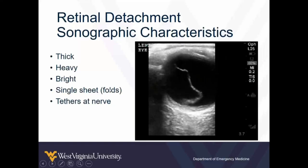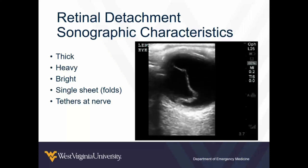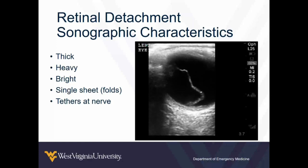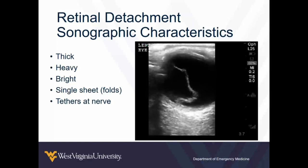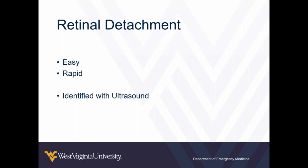There are things that can look similar that you need to differentiate. The retina is a thick layer of tissue — it's heavy, so it often tends to lay in a dependent area. It's very bright, and it's a single sheet; it may have folds in it but it doesn't have branches. And if you follow it, it will usually tether at the nerve. So those are going to be important characteristics to differentiate retinal detachment from other things. This is a diagnosis you can easily and rapidly make — you can find it with ultrasound more quickly than by physical exam or other means.